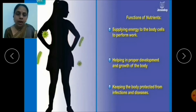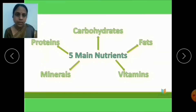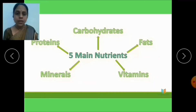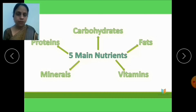There are five main nutrients present in the food. They are carbohydrates, fats, proteins, vitamins, and minerals. We will study in detail the sources and functions of each nutrient one by one.